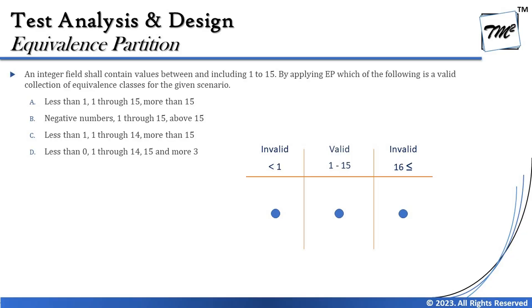A bit of mathematics must be applied — don't just solve these logically or professionally, solve them mathematically too. Option C says less than 1, then 1 through 14 — incorrect because the question clearly states the range is inclusive of 1 and 15, so 14 is wrong. Option D also has incorrect boundaries. The right answer is A: less than 1, 1 through 15, and 16 or greater.